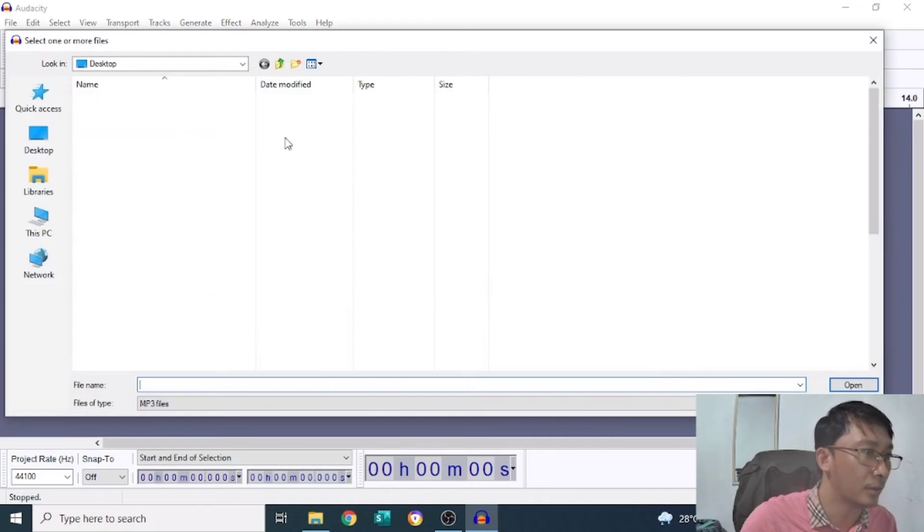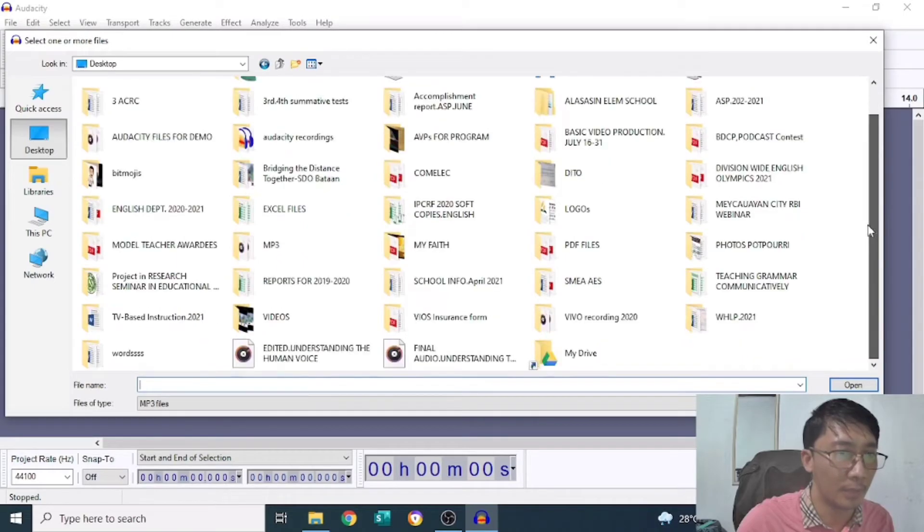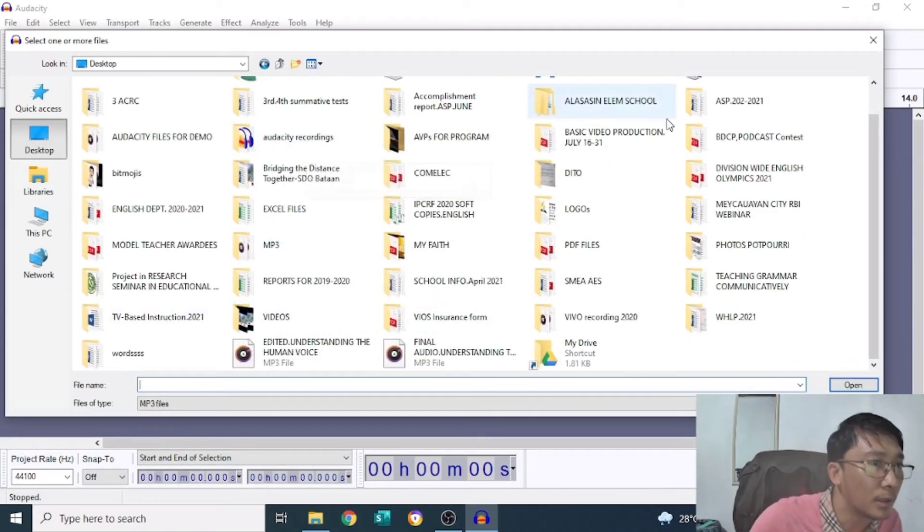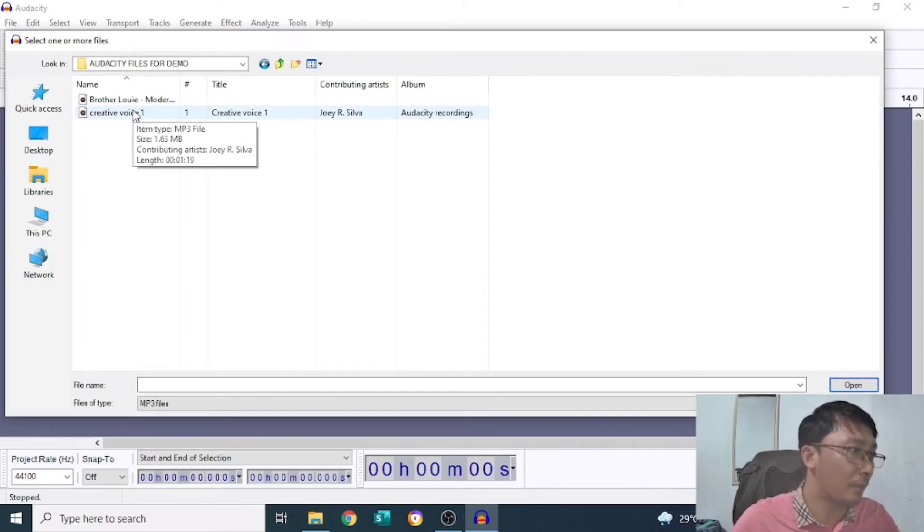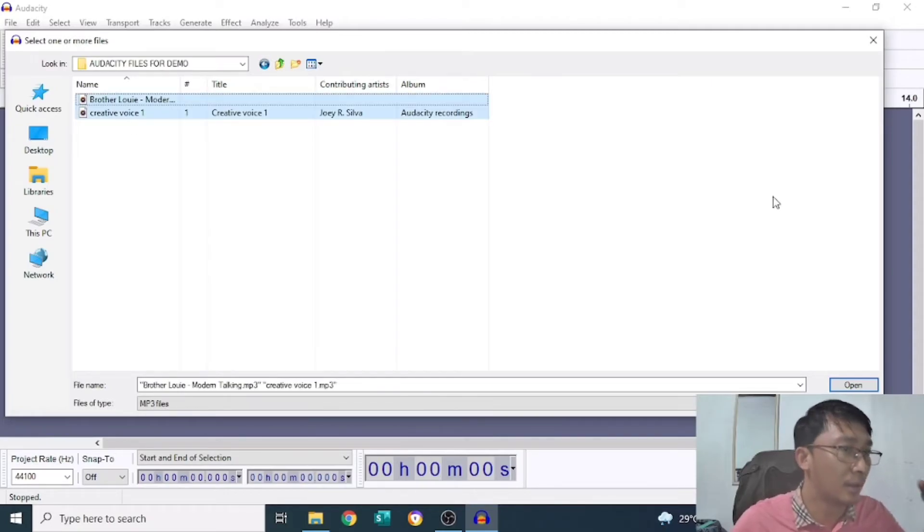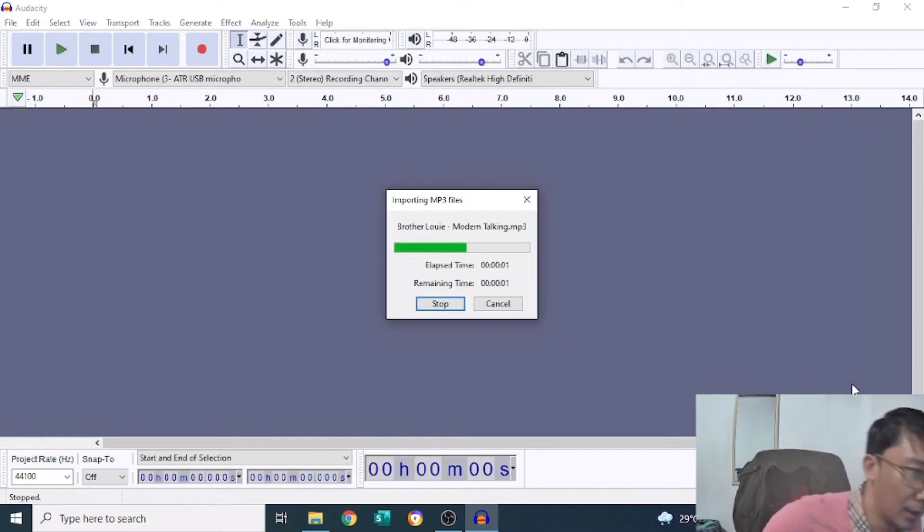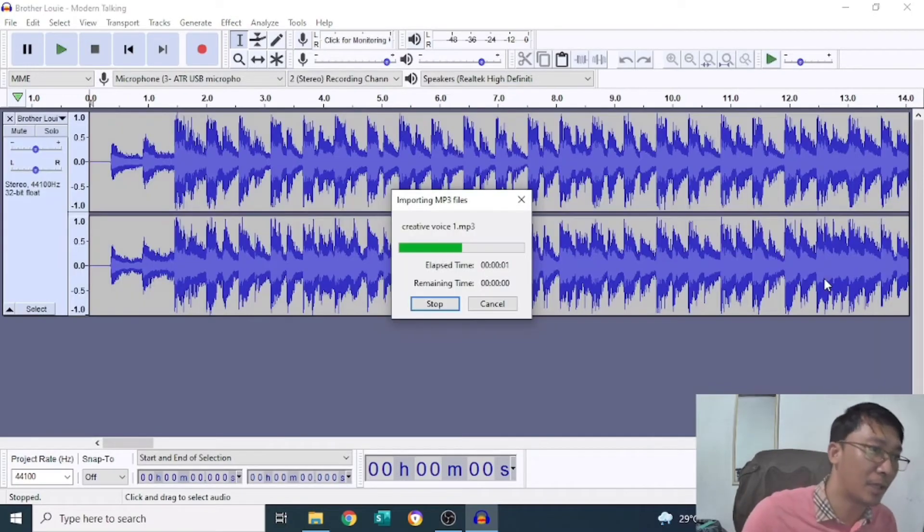Let's import audio. Then, from the desktop, may sinave na po tayo dito na nasa ating folder for demo. Audacity files for demo. So, isi-select na po natin pareho. Yung background is ito, Brother Louie, which is medyo makalumang tunog. Maganda yung beat niya, medyo upbeat. Then, yung creative voice, yun yung audio, which I recorded earlier. Open natin. At, voila, lalabas na po sila pareho.